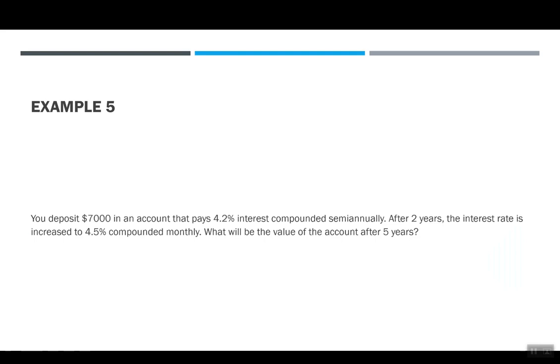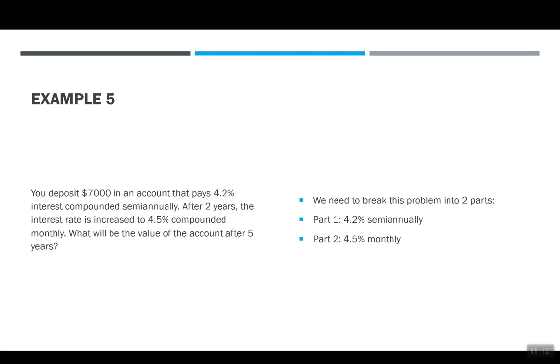Example five: say you deposit $7,000 in an account paying 4.2% interest compounded semi-annually. After two years, the interest rate is increased to 4.5% compounded monthly. What will be the value of the account after five years? This problem is much different because it wasn't the same amount of interest in the same amount of compounding over the entire amount of the investment. So we're going to need to do this in multiple steps. Part one, we need to figure out what's happening at 4.2% semi-annually. And then part two, we need to figure out what will happen at 4.5% compounded monthly.